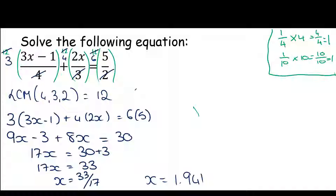So I'm going to multiply each piece of the equation by 12. Some parts cancel: 4 goes into 12 three times, 3 goes into 12 four times, and 2 goes into 12 six times. That leaves me with 3(3x − 1) + 4(2x) = 6(5). Multiplying out: 9x − 3 + 8x = 30. Getting all letters on one side: 17x = 30 + 3 = 33, so x = 33/17. As a decimal that's approximately 1.941, but leaving it as a fraction is absolutely fine.